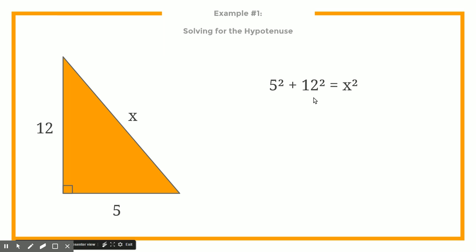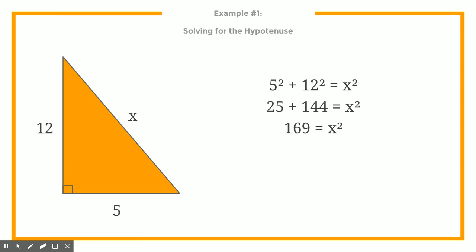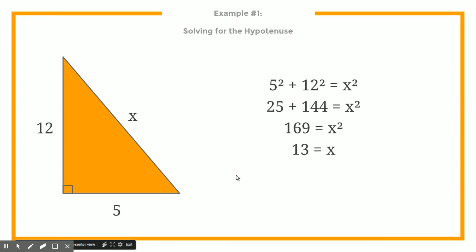Then we start to evaluate: 5 squared is 25, 12 squared is 144, and when I add those together I get 169 equals x squared. To get the value of x, you square root both sides, or ask yourself what number times itself equals 169 — and that has to be 13. So that side length is going to be 13. If it were less than 12, you'd know there's a problem, since the hypotenuse has to be the longest side. By using the Pythagorean theorem, you can find that missing value.